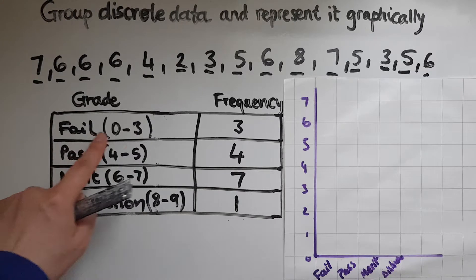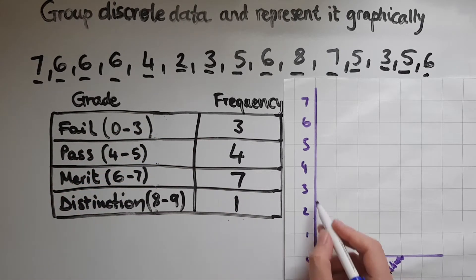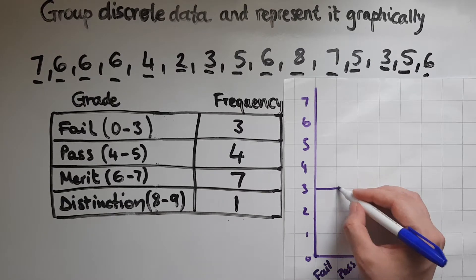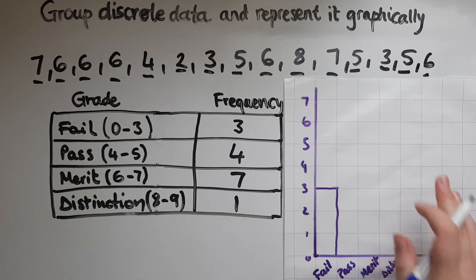So how many received fail? There were 3 of them. So 1, 2, 3. And I've just shown that.